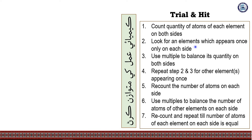To balance a chemical equation: count all atoms of each element on each side. Look for an element which appears only once on each side. Use coefficients (multiples) to balance its quantity on both sides. Repeat for other elements appearing once only, then recount the number of atoms on each side.